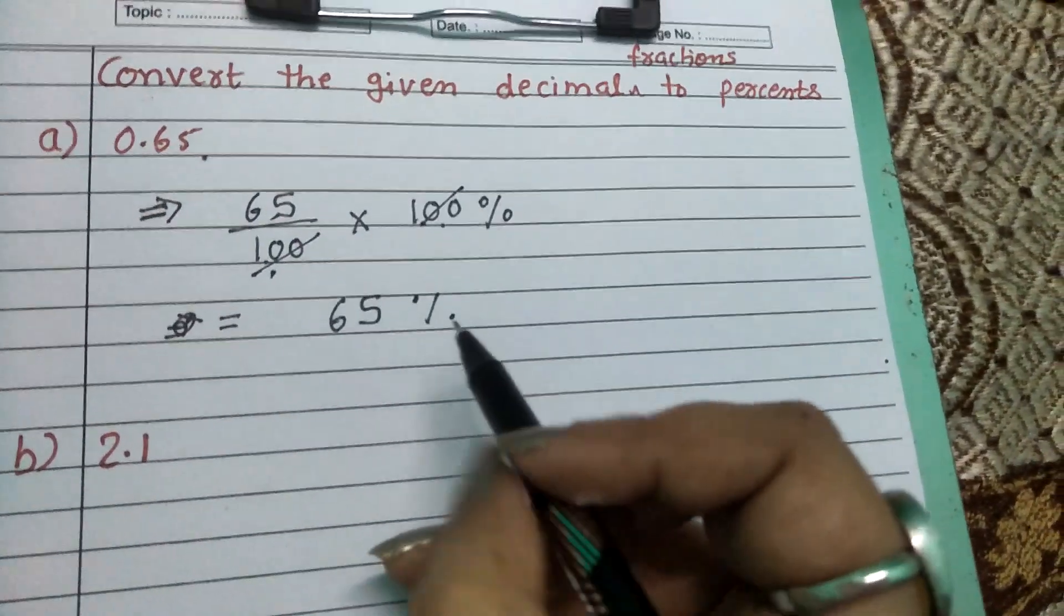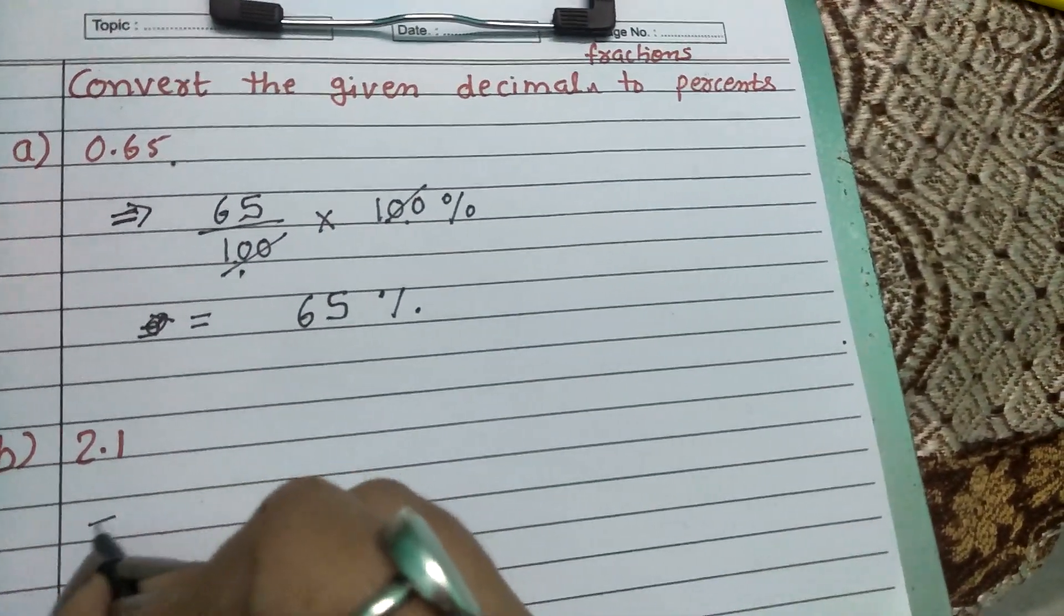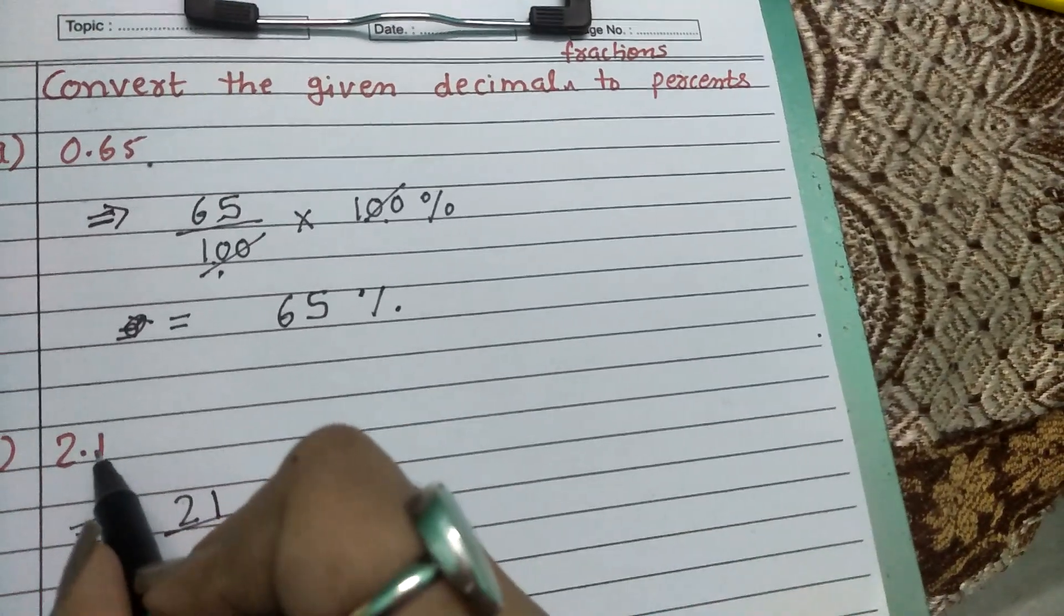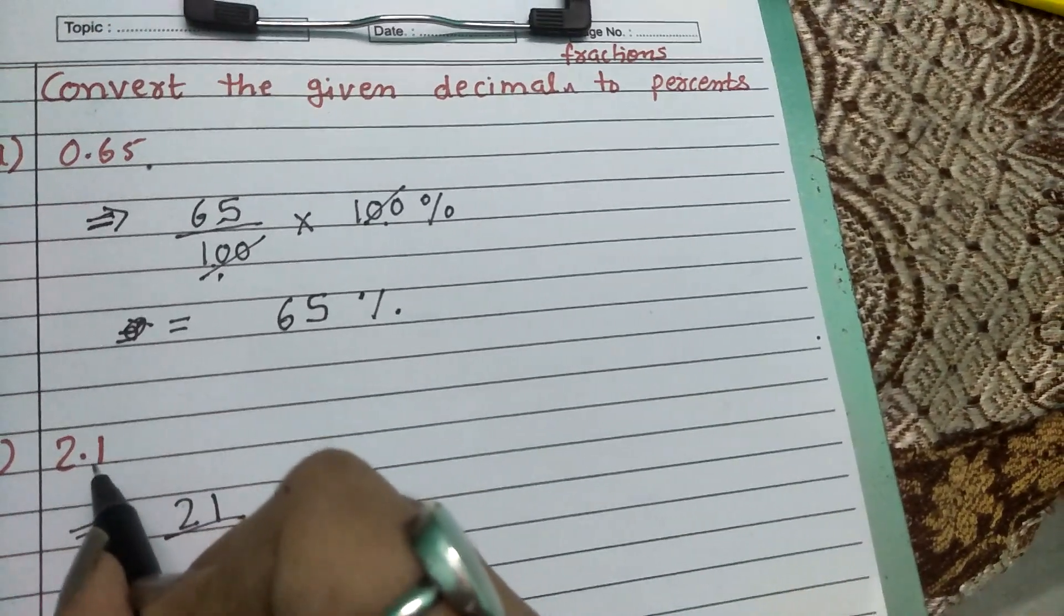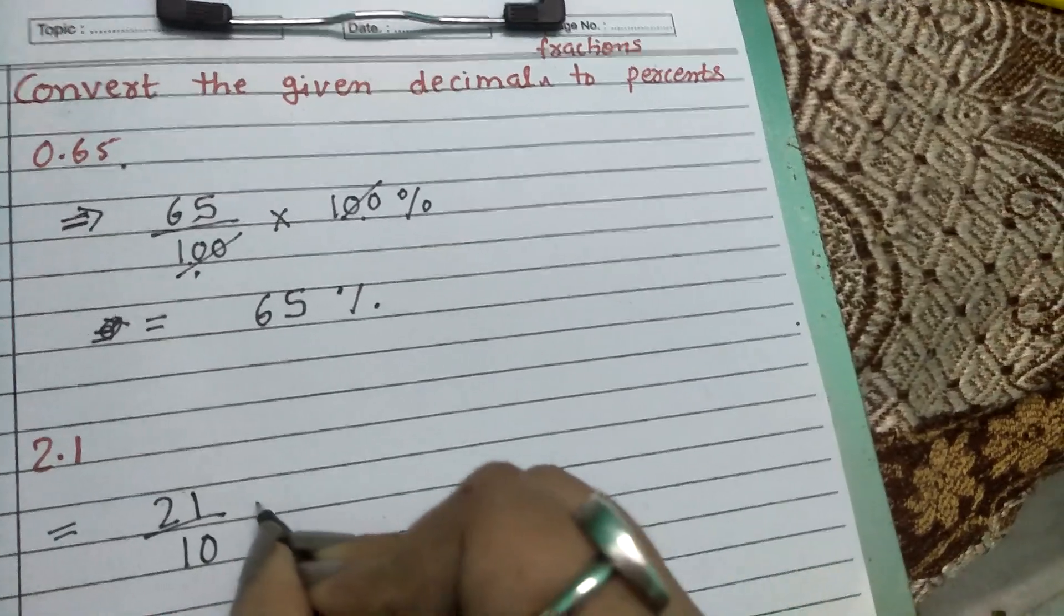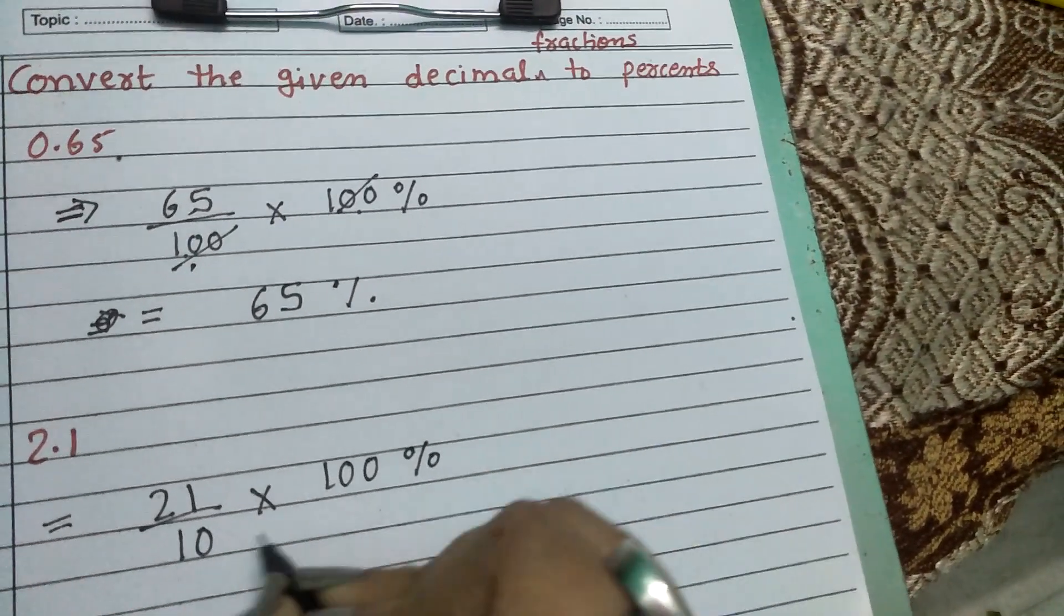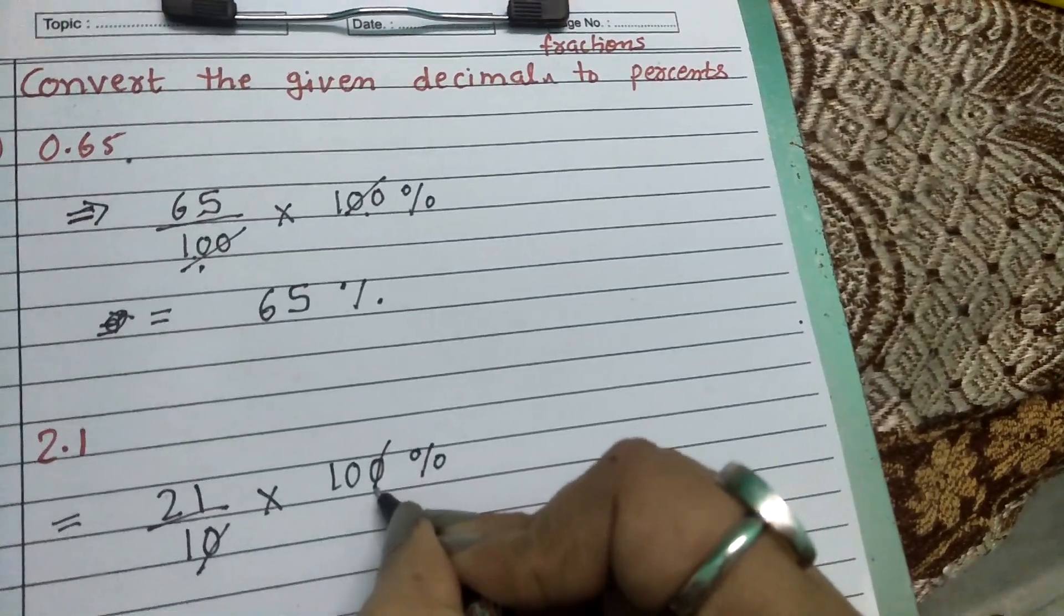Again, 2.1 - to convert this into a fraction, it's 21. Here the point is on the tenth place, so we write 21 upon 10, multiply by 100 percent. The tens cancel out.